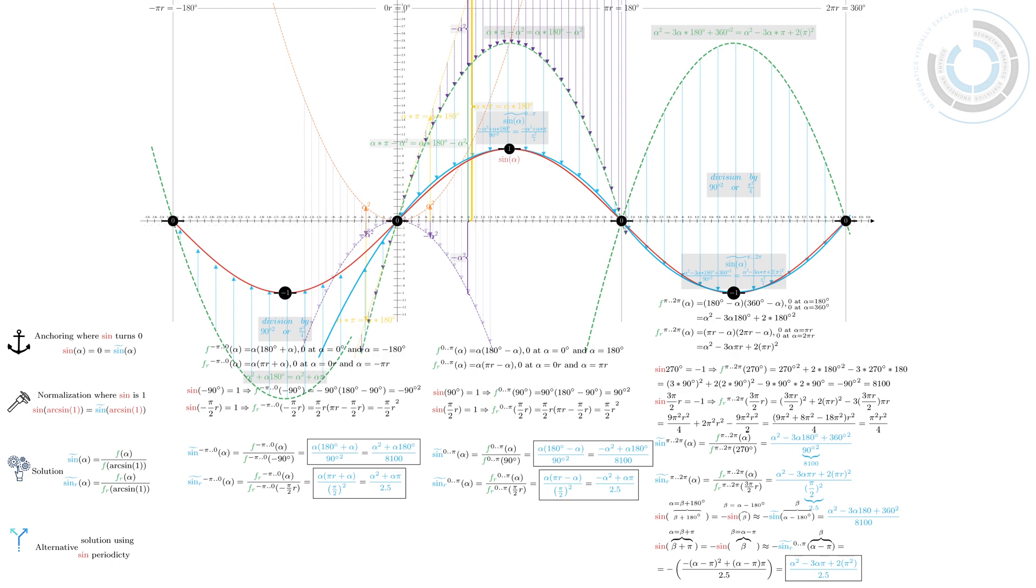We divide with this normalizer to end up with our final solution. Again, as an alternative, we can use the periodicity of sine. Knowing that sine minus alpha equals minus sine alpha, we just substitute minus alpha to our first function, between 0 and 180, ending up with the same result we just calculated in our earlier approximation.